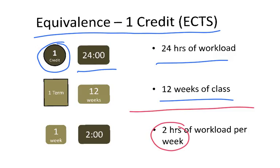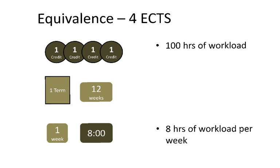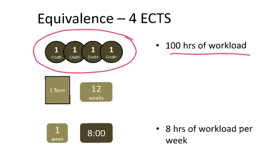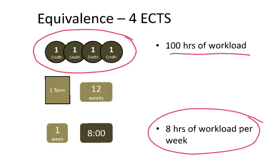But classes normally are a bit more than one credit. So let's see — we have a class of four credits, which will be 100 hours of workload. Again, if we divide it by 12 weeks we end up with eight hours of workload per week. So a typical class of four credits: you might have two hours in the classroom and you should dedicate six-plus hours in your own library, dorm, home, etc.